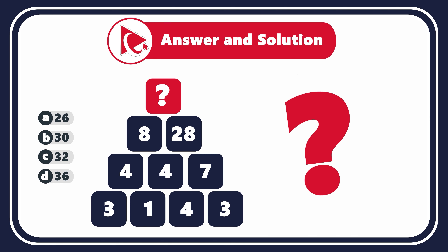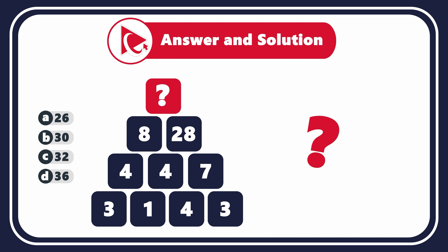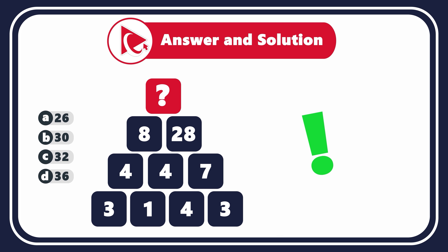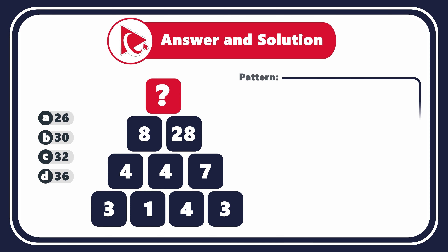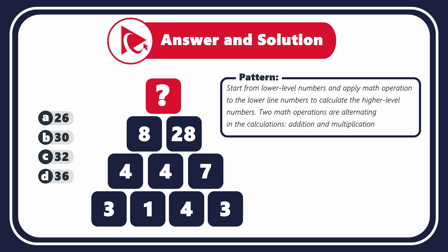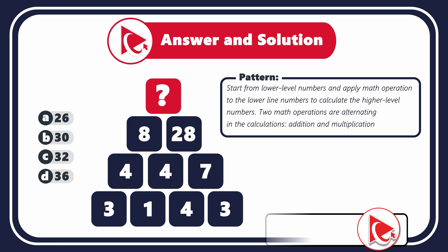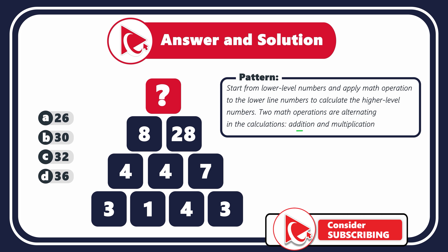Remember how I presented the information to you? I started from the top and went to the bottom. But in fact, you need to start from the low-level numbers and apply math operations to them to calculate the higher-level numbers. To confuse you even more, there are two math operations that are alternating in the calculations: addition and multiplication.